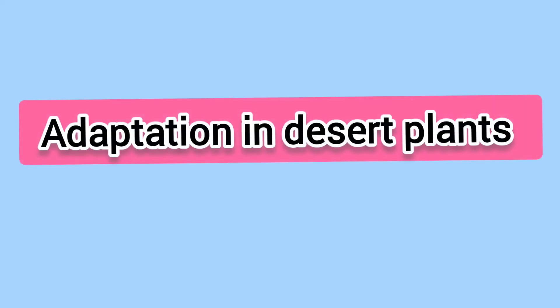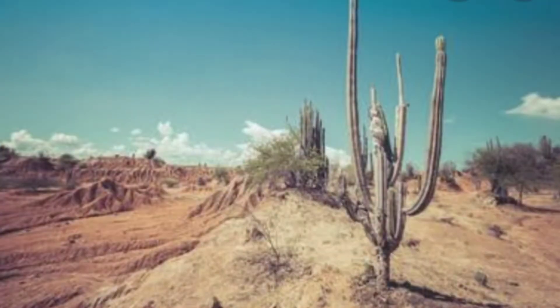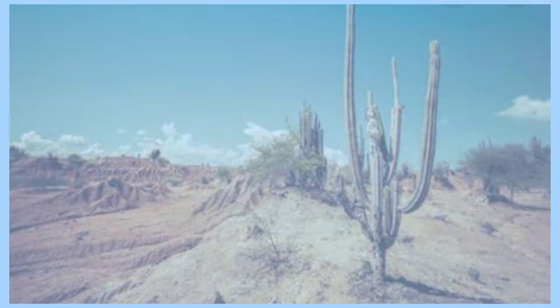Adaptation in desert plants: Cacti are a good example of how a plant has adapted to desert habitats. Deserts are hot and dry environments, so it takes a special kind of plant to be able to survive in such harsh conditions.